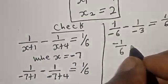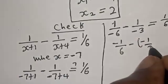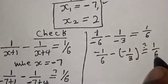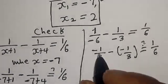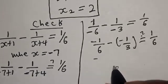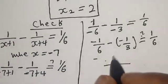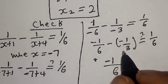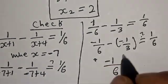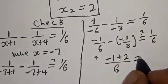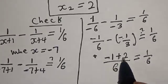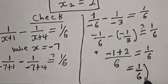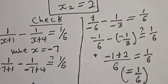This is the same as minus 1 over 6 minus (minus 1 over 3) must equal 1 over 6. Finding a common denominator of 6: minus 1 over 6 plus 2 over 6 must equal 1 over 6. That gives minus 1 plus 2 over 6, which is 1 over 6. This satisfies the given equation at x equals minus 7.